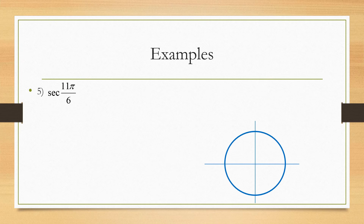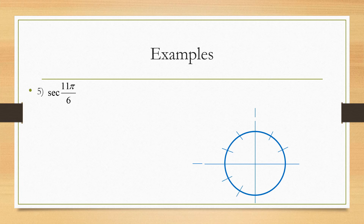Now let's do some radians examples. Find secant of 11π over 6. Since the denominator is 6, we use the 30-60-90 unit circle. Count all the way around: one pi over six, two pi over six, three pi over six, four pi over six, five pi over six, six pi over six, seven pi over six, eight pi over six, nine pi over six, ten pi over six, and finally eleven pi over six is right there. Draw in our triangle.